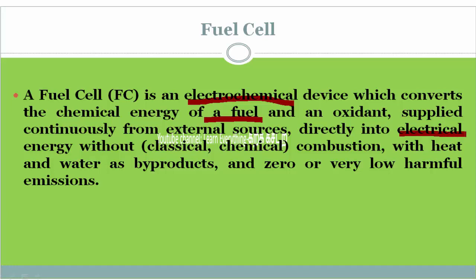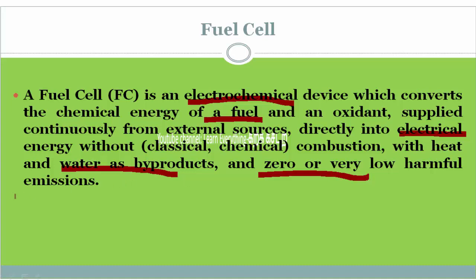In a fuel cell, we are directly converting the chemical energy of fuel into electrical energy. In conventional methods like the IC engine, the byproduct is carbon monoxide and carbon dioxide. But in a fuel cell, the byproduct is water. This makes the fuel cell a very low or near-zero harmful emission method.